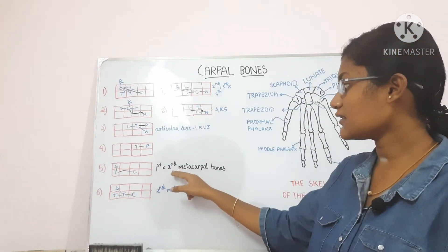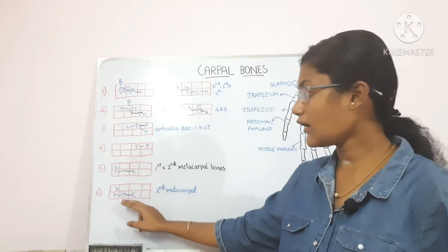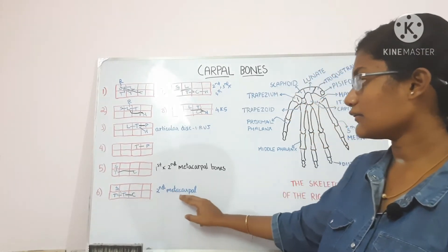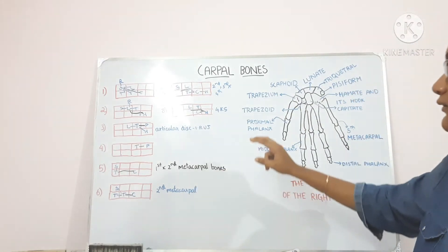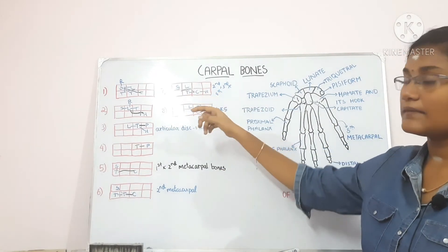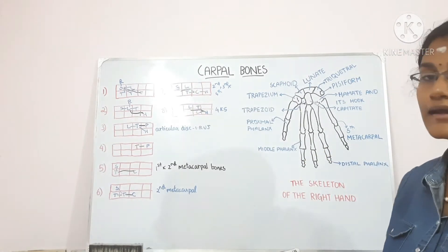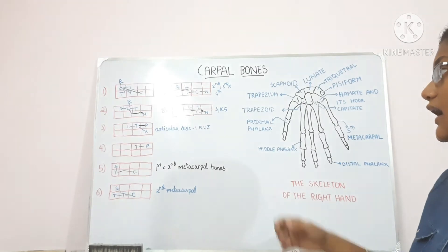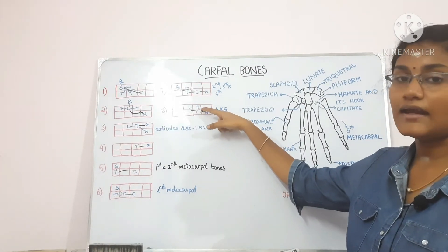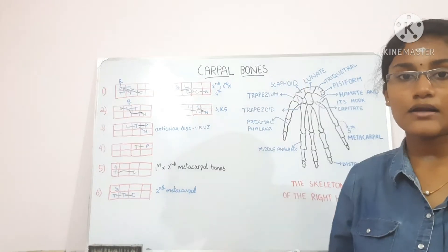The trapezium bone articulates with the scaphoid and the capitate, and also with the first and second metacarpal bones. The trapezoid bone articulates with the trapezium, capitate and scaphoid, and also the second metacarpal. The capitate articulates with the scaphoid, lunate, trapezoid and hamate, and also the second, third and fourth metacarpal bones. The hamate articulates with the capitate, triquetral and lunate, and the fourth and fifth metacarpal bones.